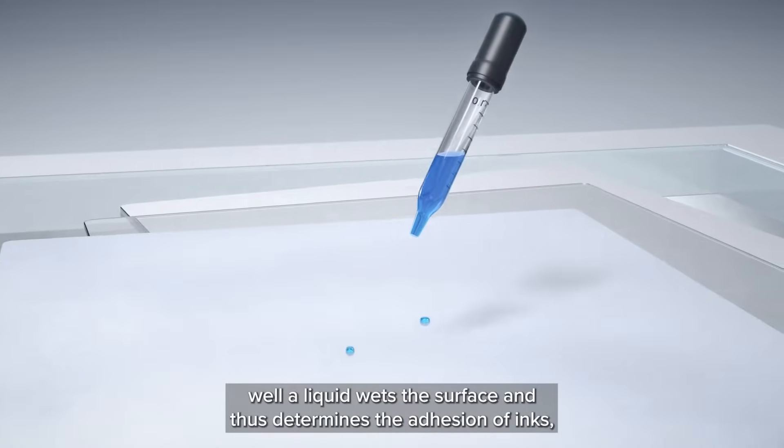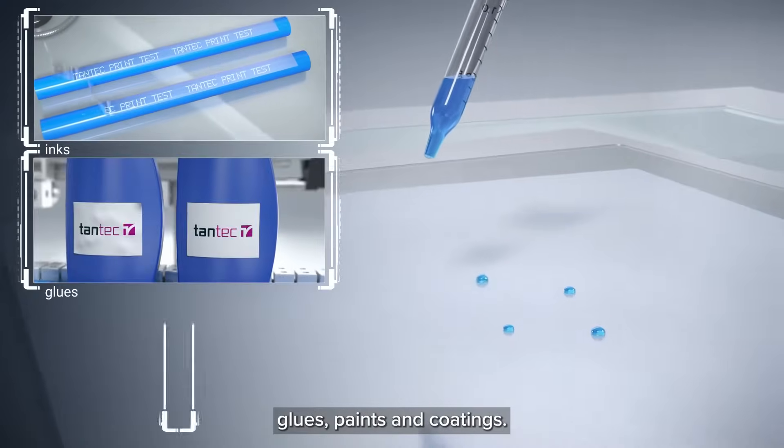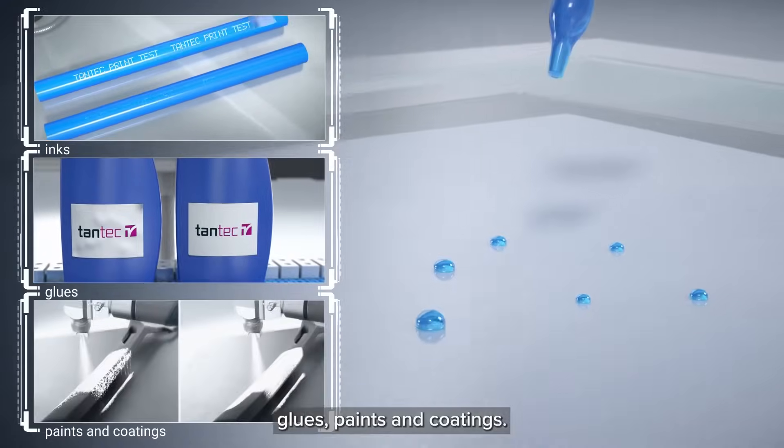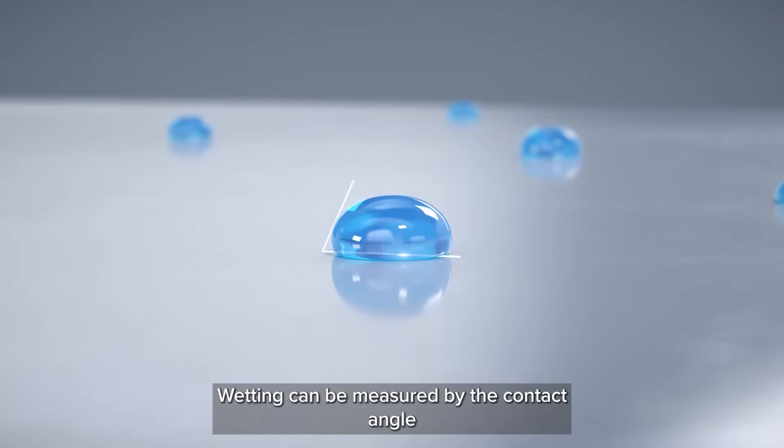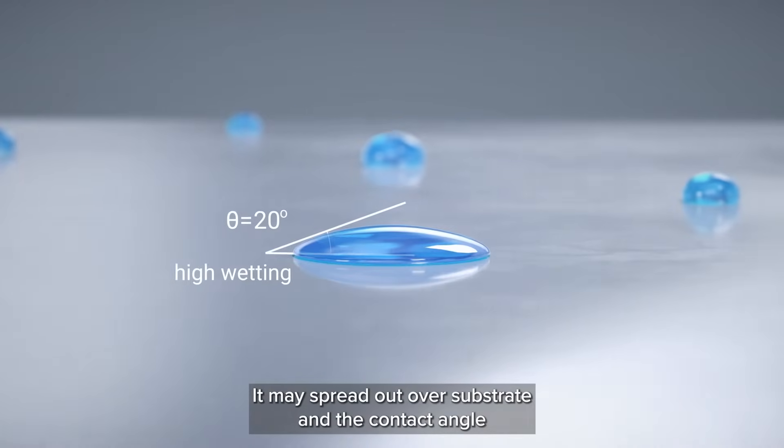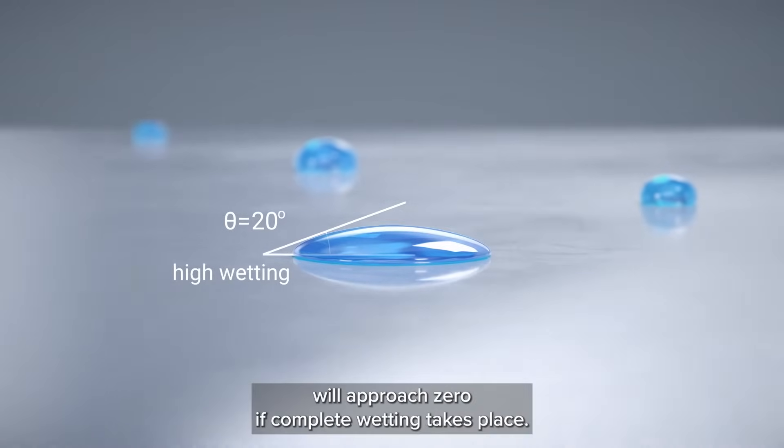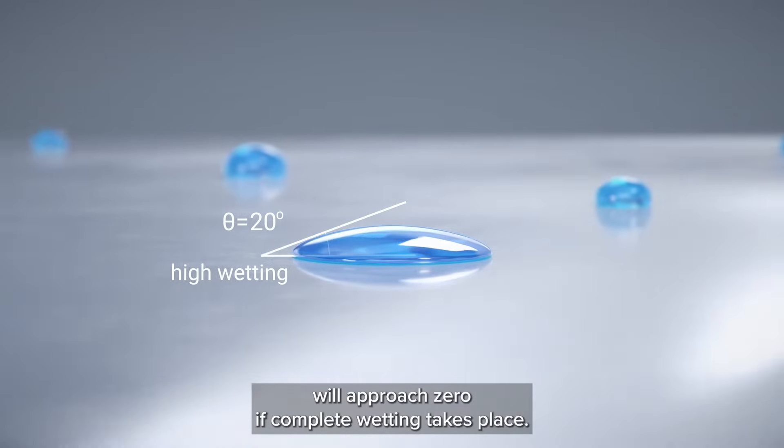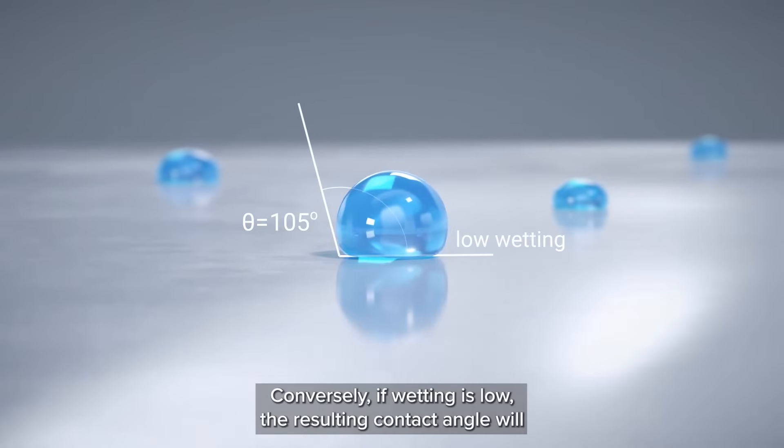Wetting can be measured by the contact angle of a bead of liquid on the surface. It may spread out over the substrate and the contact angle will approach zero if complete wetting takes place. Conversely, if wetting is low, the resulting contact angle will be significant.